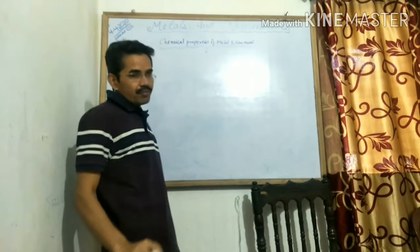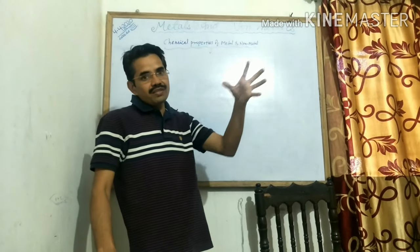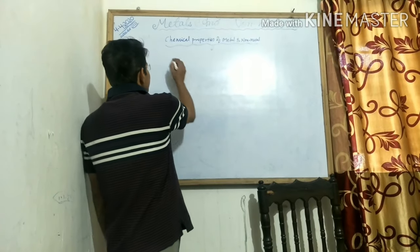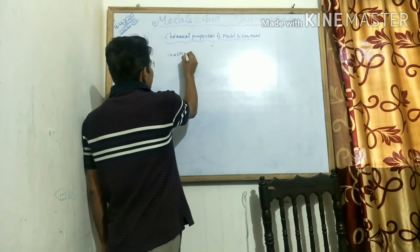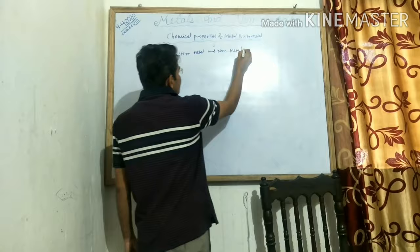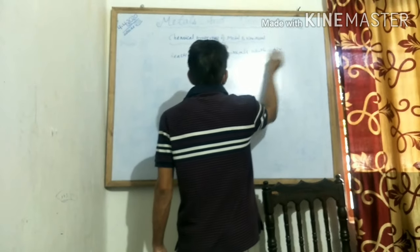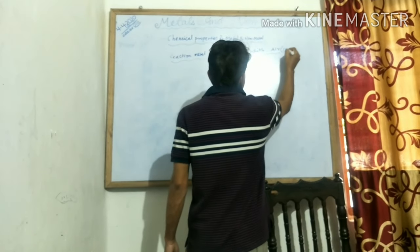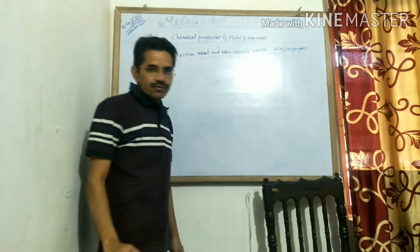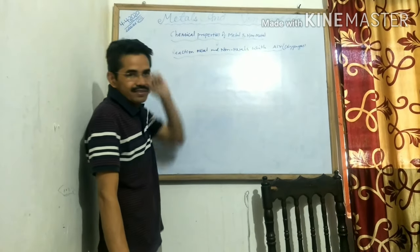Chemical properties means what are the reactivity of metals and non-metals with nature — with oxygen, water, acid, and base. First of all, we are going to discuss the reaction of metals and non-metals with air, or you can take oxygen, since oxygen is also present in air.